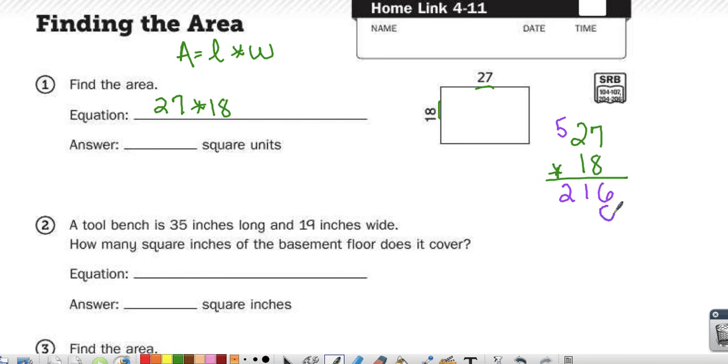Then since I'm moving to the tens place, I'll put 1, 0. 1 times 7 is 7, 1 times 2 is 2. When I add those up, I get a total of 486 square units.